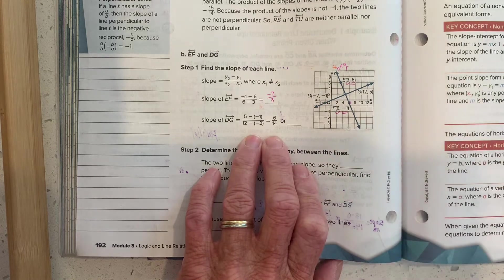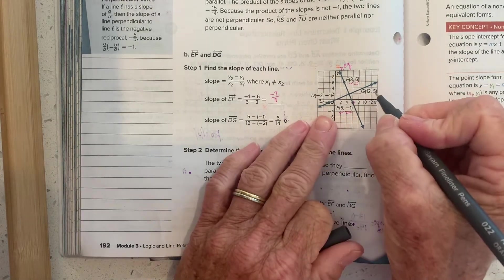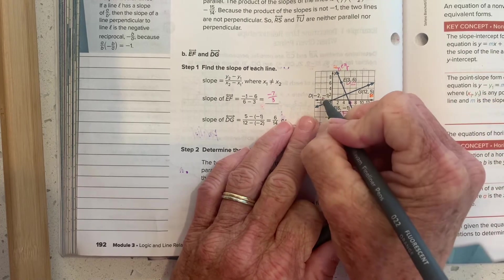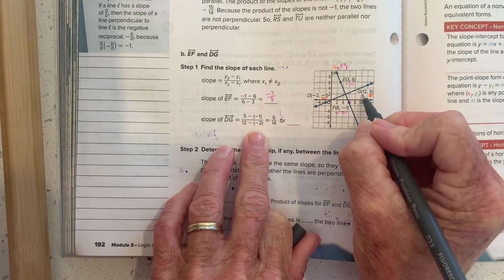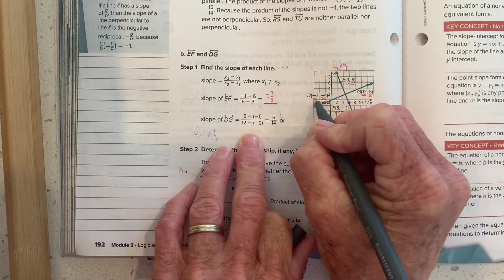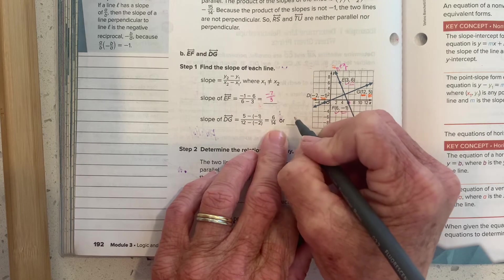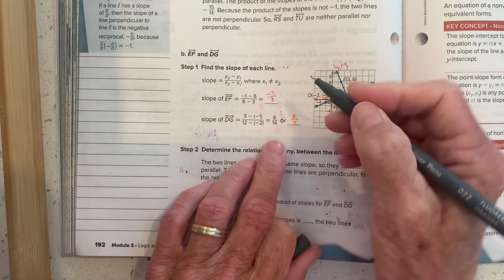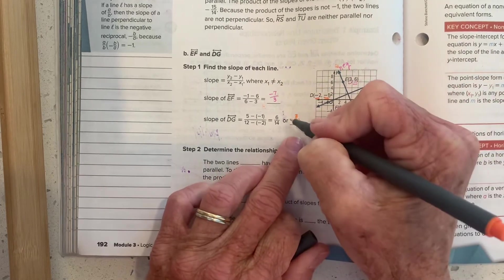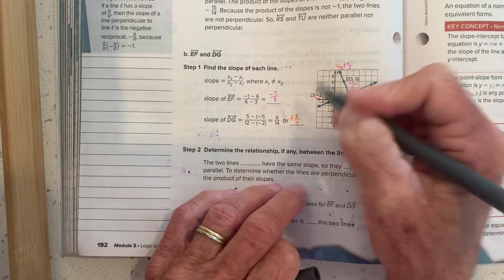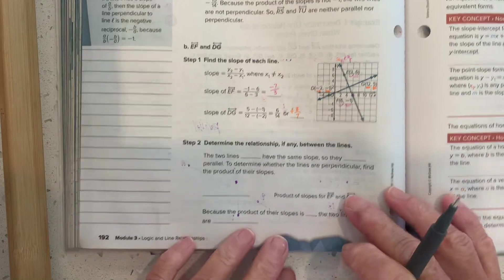So for DG, they've done, they're doing it this way. They've done this y minus that y, 5 minus negative 1. So we need to start here for x as well. 12 minus negative 2 is 6 over 14. Those are both even, and that reduces down to 3 7ths. So this one is negative 7 over 3. This one is positive 3 over 7. They're opposite reciprocals. So these are going to be perpendicular.